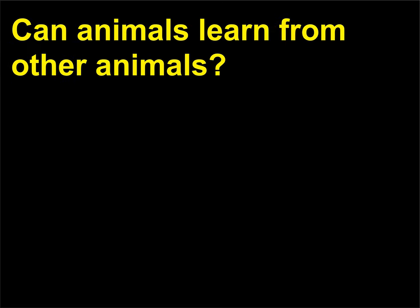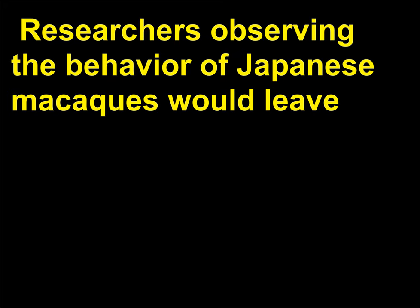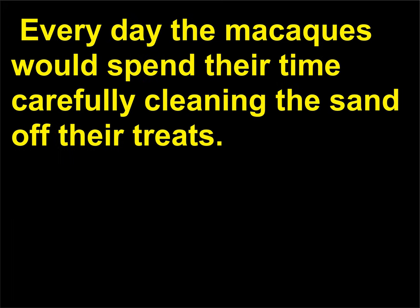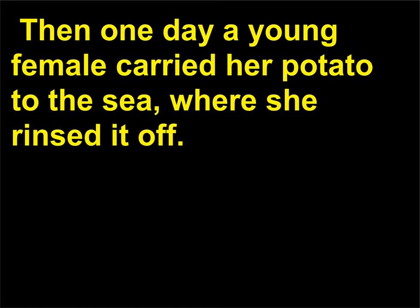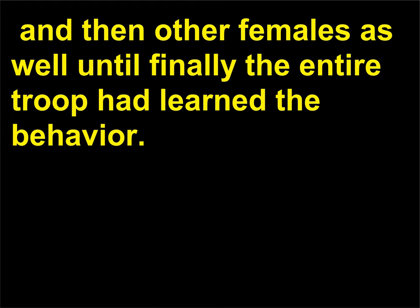Can animals learn from other animals? Researchers observing the behavior of Japanese macaques would leave pieces of potato on the beach of the island where the study occurred. Every day the macaques would spend their time carefully cleaning the sand off their treats. Then one day a young female carried her potato to the sea, where she rinsed it off. Soon her mother was following her example, and then other females as well, until finally the entire troop had learned the behavior.